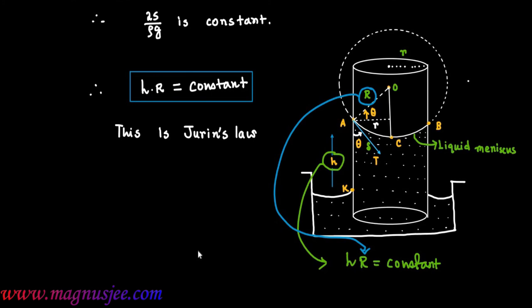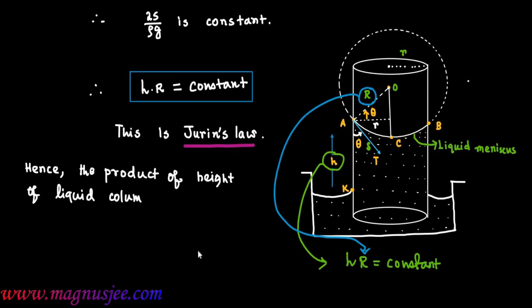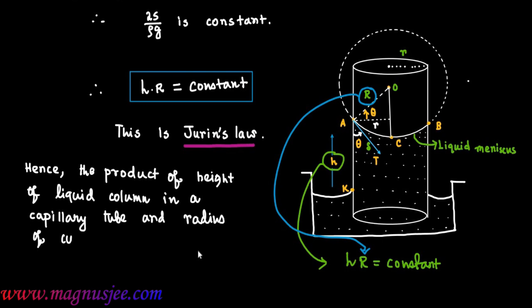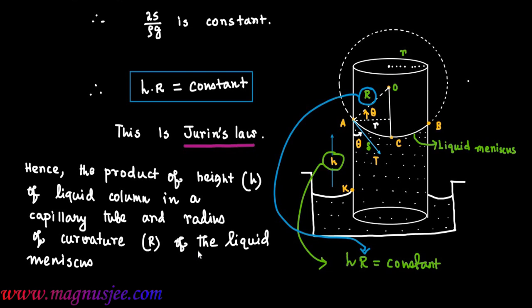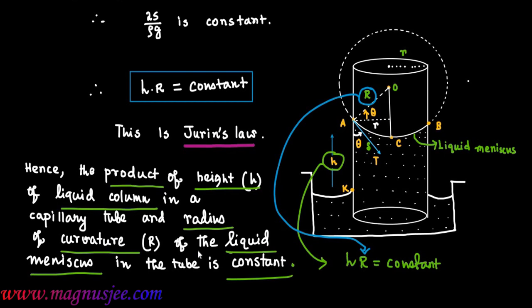This is Jurin's Law: h · R = constant. Hence the product of the height of liquid column in a capillary tube and the radius of curvature of the liquid meniscus in the capillary tube is constant. H is the height of liquid column and R is the radius of curvature of the free surface of liquid, and the product H · R is constant.